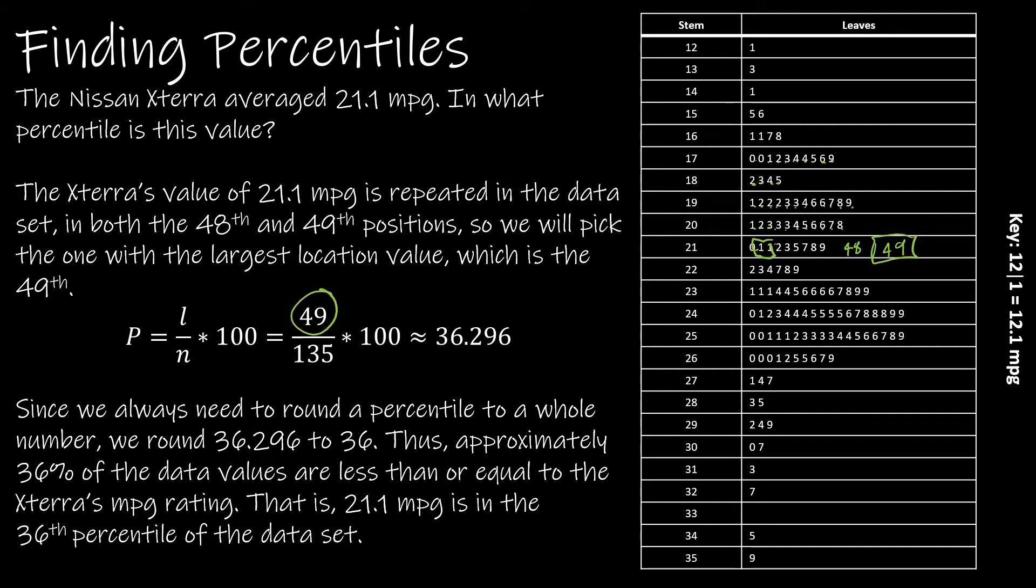So P, which is the percentile we're trying to find, is location 49 divided by N, which is 135, times 100. That gives me 36.296, and we'll round that to 36. What does that mean? Approximately 36% of the data values are less than or equal to the Xterra's miles per gallon rating, or that 21.1 is in the 36th percentile of the data set.